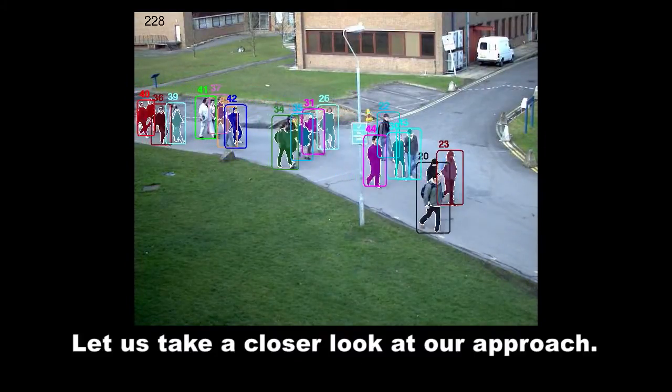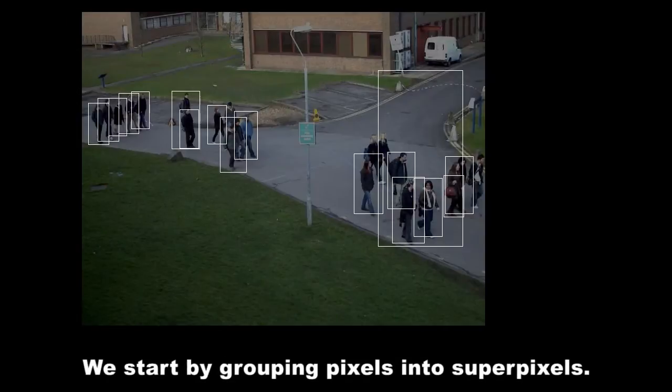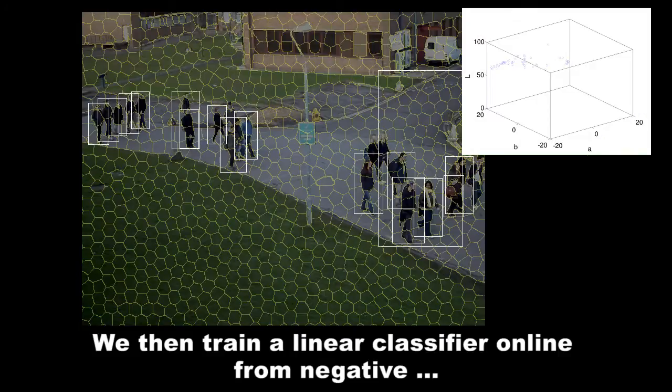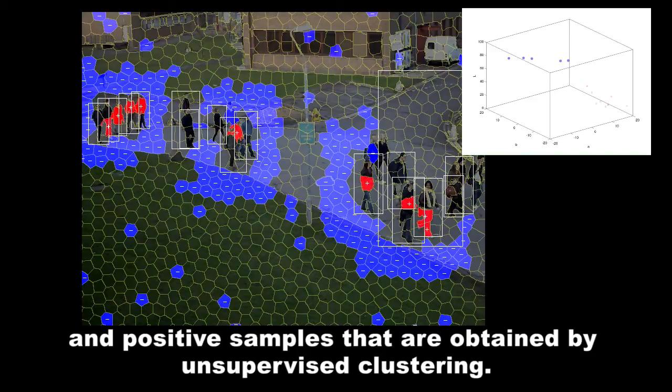Let us take a closer look at our approach. We start by grouping pixels into superpixels. We then train a linear classifier online from negative and positive samples that are obtained by unsupervised clustering.